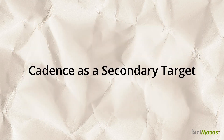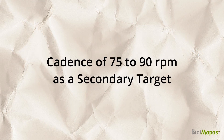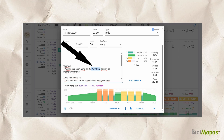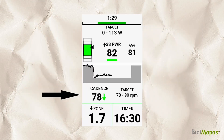Step 6: Intervals.ICU supports adding cadence as a secondary target in each section of the workout. Setting this up requires manual editing in the text editor for each workout step, as there is no option to do it through the graphical interface. For each step, after the zone target, manually add a space followed by "75–90 RPM". This will set the cadence as a secondary target. You can see the cadence target range when scrolling through the chart, and this is how it shows in Garmin.